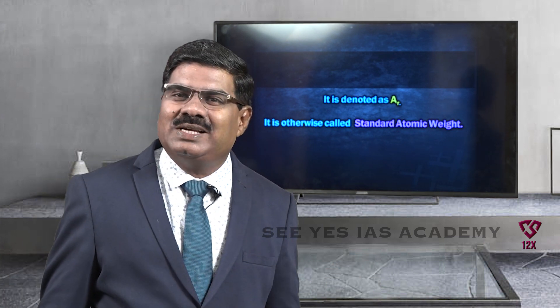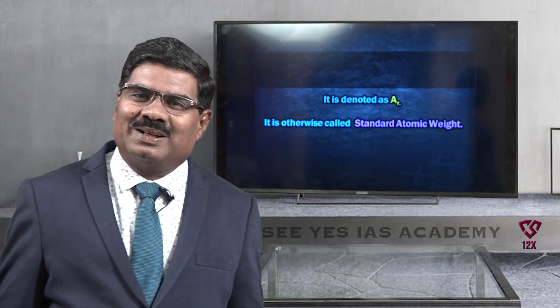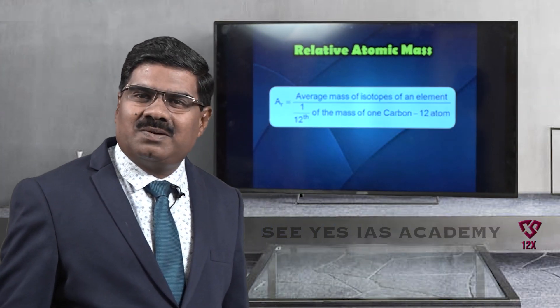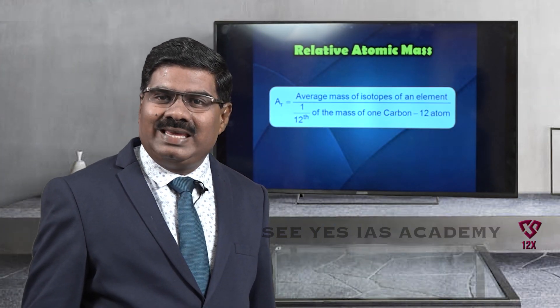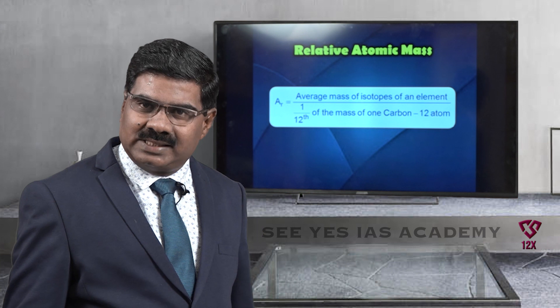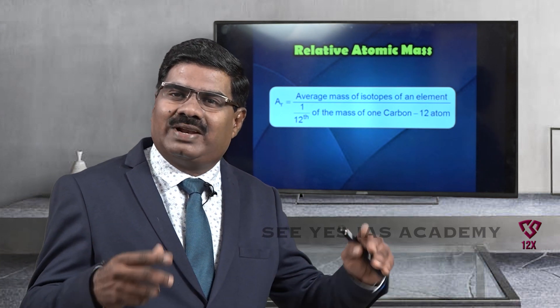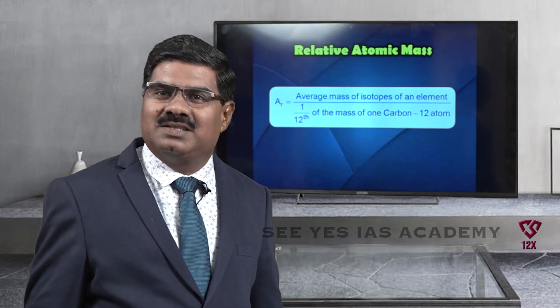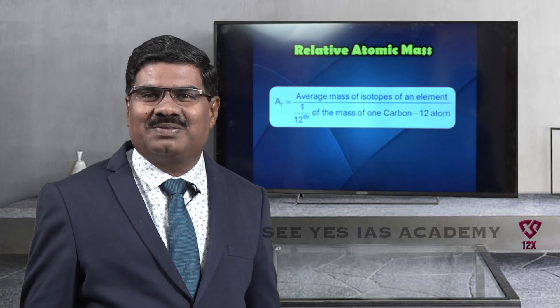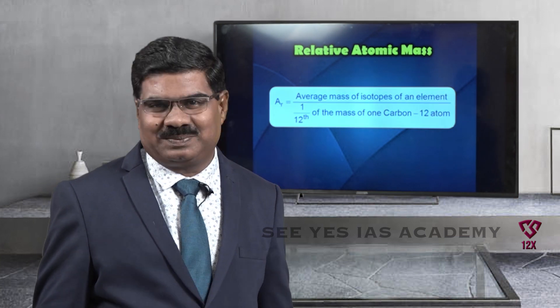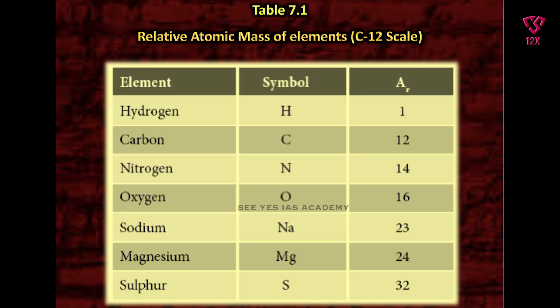Relative atomic mass is otherwise called standard atomic weight. AR is equal to average mass of isotopes of an element divided by 1 twelfth of the mass of a carbon-12 atom. Table 7.1 shows the relative atomic mass of elements in the carbon-12 scale.